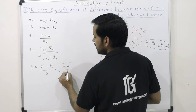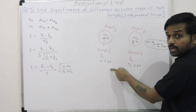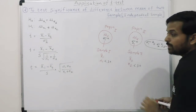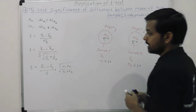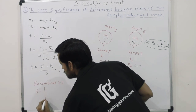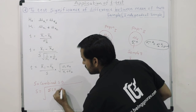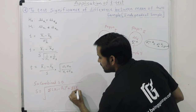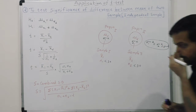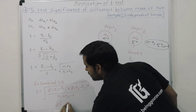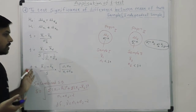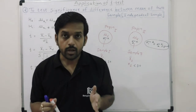The test statistic formula is: t equals (x-bar-one minus x-bar-two) divided by S times the square root of (N1 times N2) divided by (N1 plus N2). Here N1 is the first sample size, N2 is the second sample size, and S is the combined standard deviation. The formula for S is: S equals the square root of [Σ(x1 minus x̄1)² plus Σ(x2 minus x̄2)²] divided by (n1 plus n2 minus 2). The degree of freedom is n1 plus n2 minus 2.